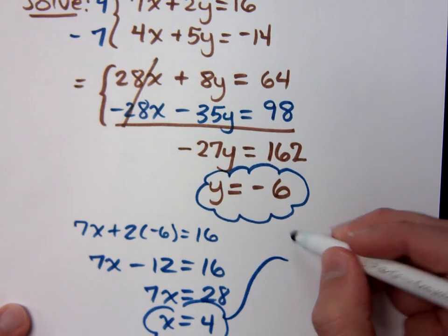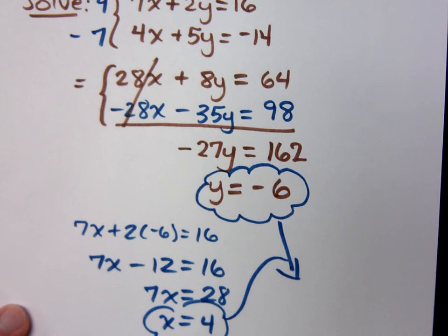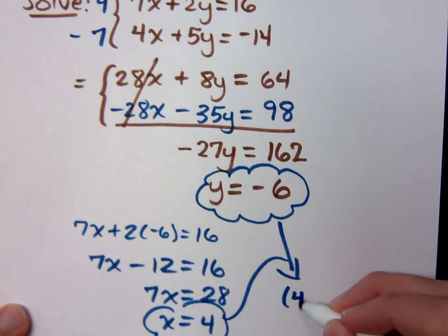And when the powers combine, we get the ordered pair of (4, -6).